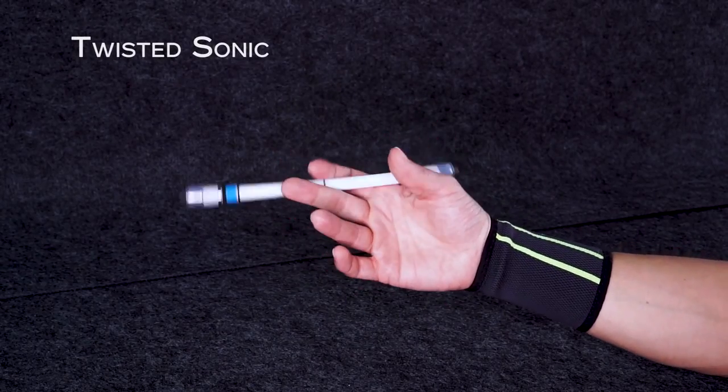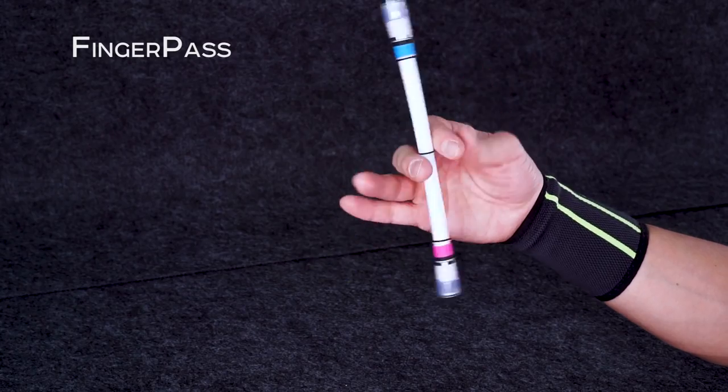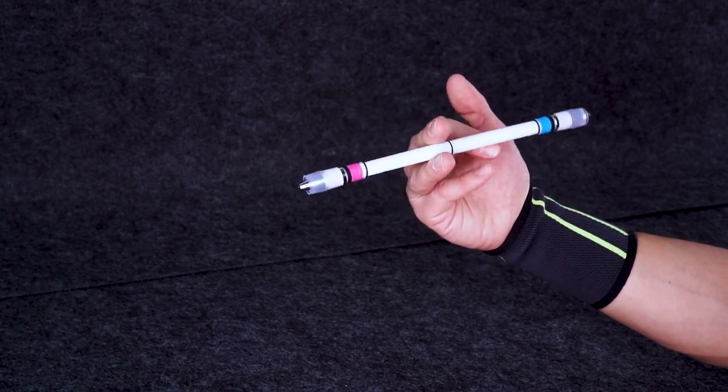Today I will show you how to link a few tricks which you have learned by far. To do this mini combo you should already know how to do twisted sonic, normal and reverse, finger pass, normal and reverse, and sonic. Tutorials for all of these tricks are on the channel, links in description below. Don't start before you mastered all of them.